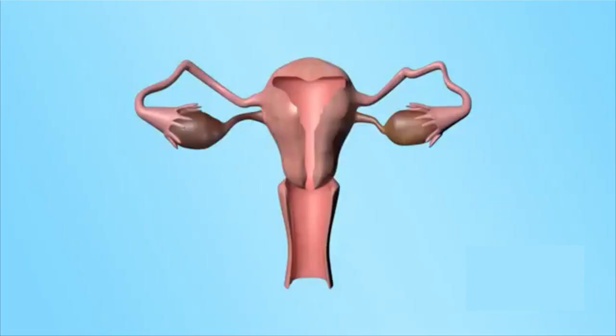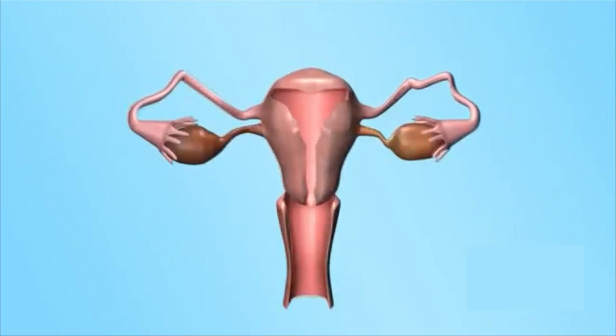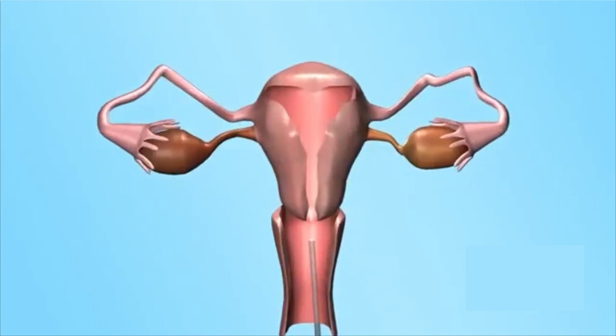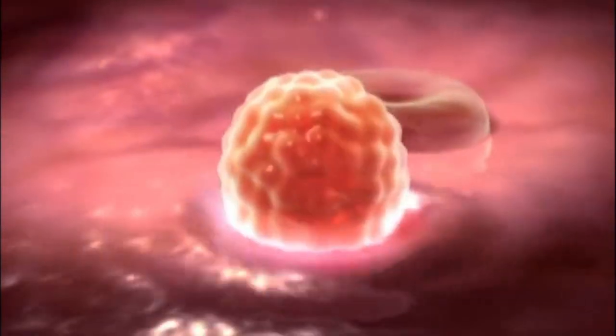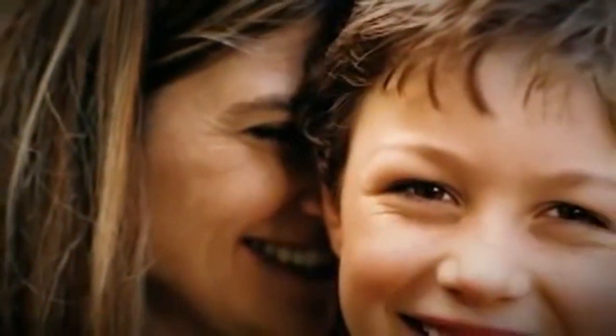Uterine Tissue Repair: Stem cells contribute to repairing damaged uterine tissue, which is essential for a healthy pregnancy. In conditions where uterine lining abnormalities contribute to infertility, stem cell therapies could improve the chances of successful embryo implantation and pregnancy.